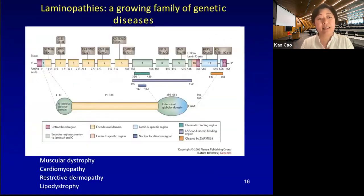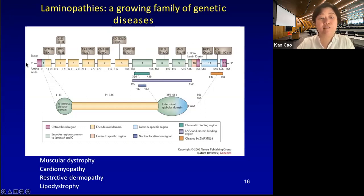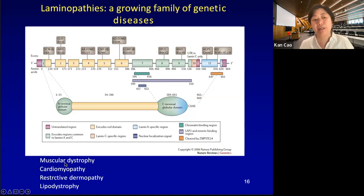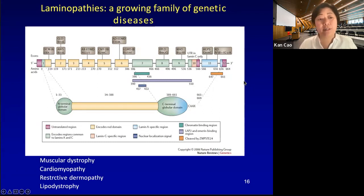The second direction: after the identification of the progeria mutation, more and more mutations associated with human disease have been found in the lamin A gene — causing a variety of diseases ranging from muscular dystrophy and cardiomyopathy to lipodystrophy. Most of these diseases are very rare and not well characterized. I think the knowledge gained in progeria research can be quickly transferred to understand these diseases and help those patients.